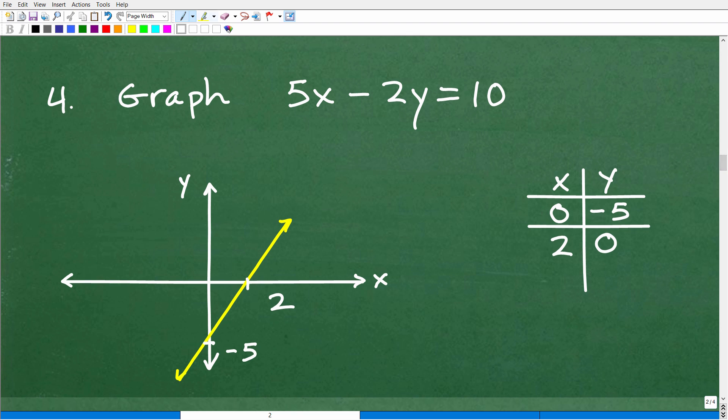So this line here is not in y equals mx plus b form. This is in standard form. And we call that like ax plus by is equal to c. And when lines are in standard form, the best way to graph these lines is to use the x and y intercepts. The x and y intercepts are the locations where the line crosses through the x-axis and the y-axis. And the easiest way to find that is to create yourself a nice little table. And we're going to figure out, we're going to plug in zero for x and zero for y. Again, this is just a quick review of how to do this.